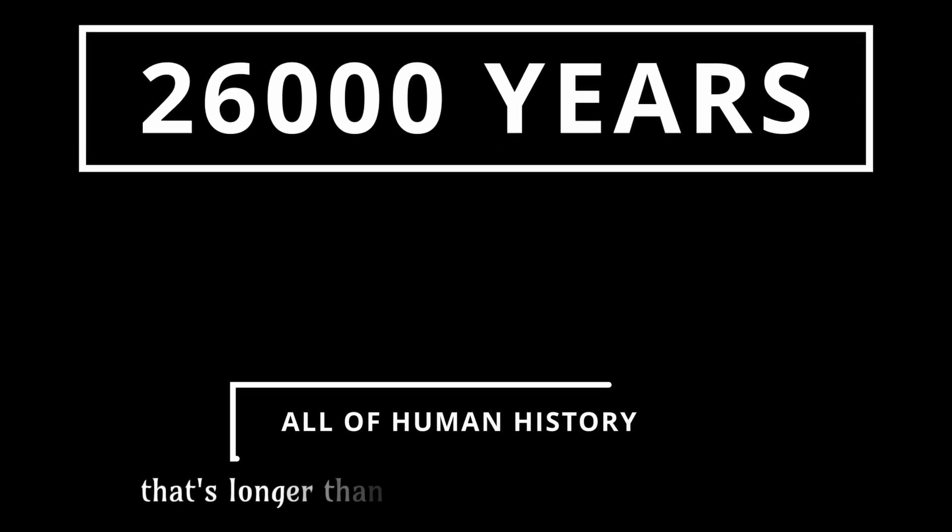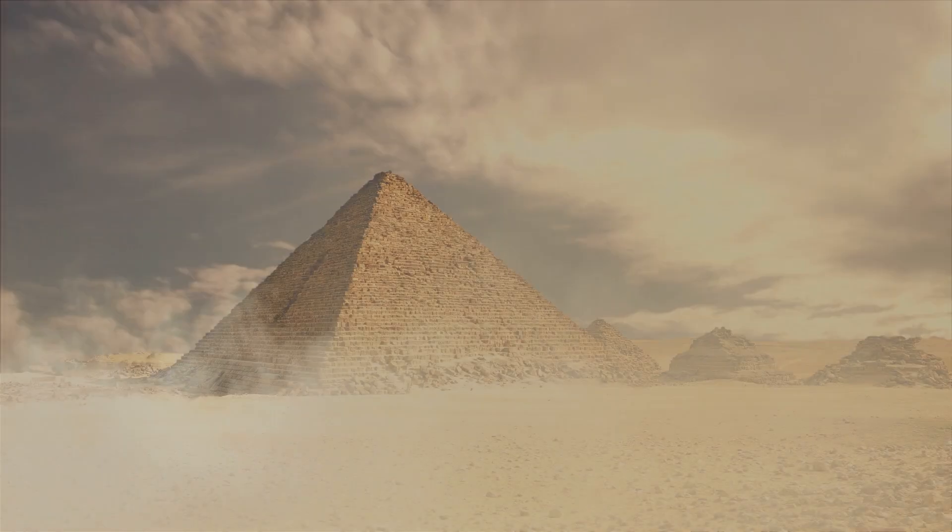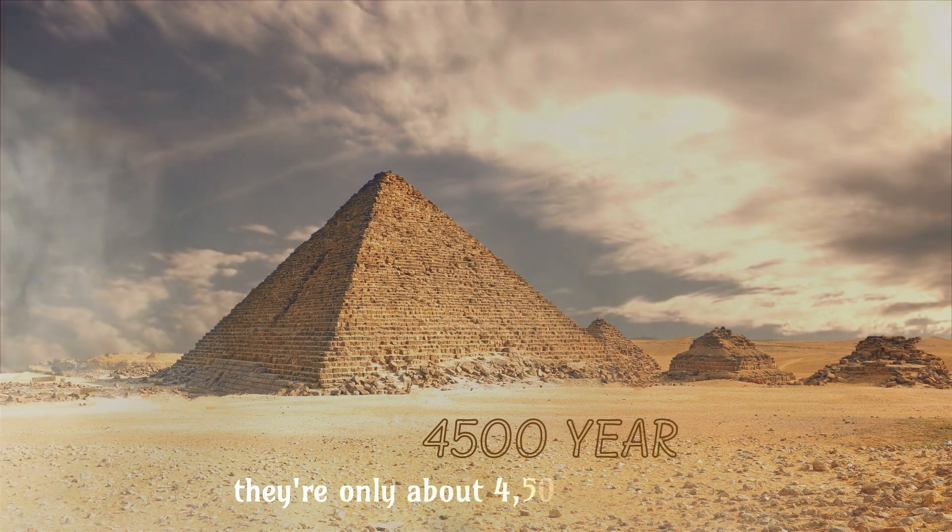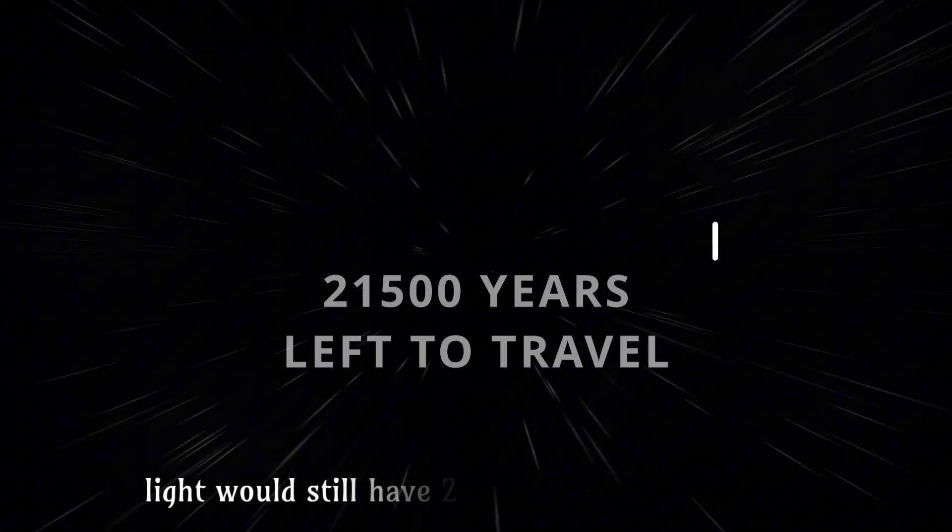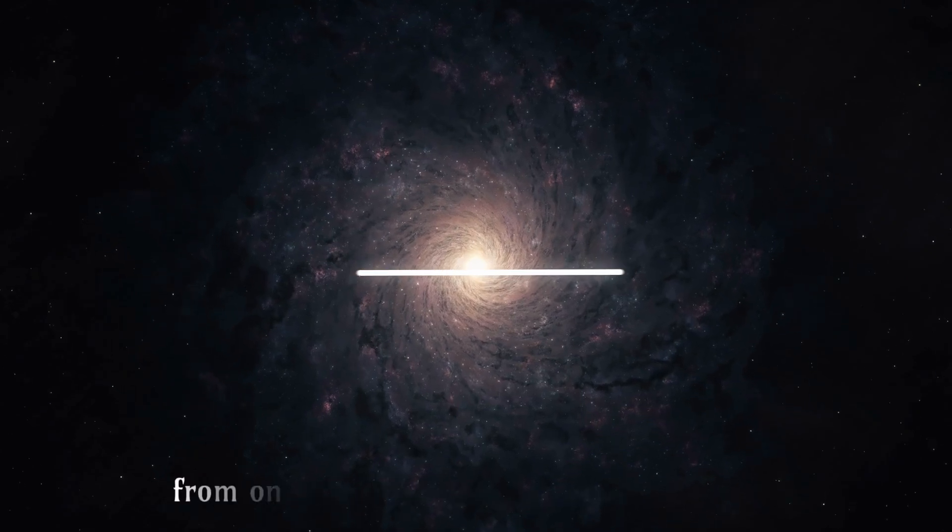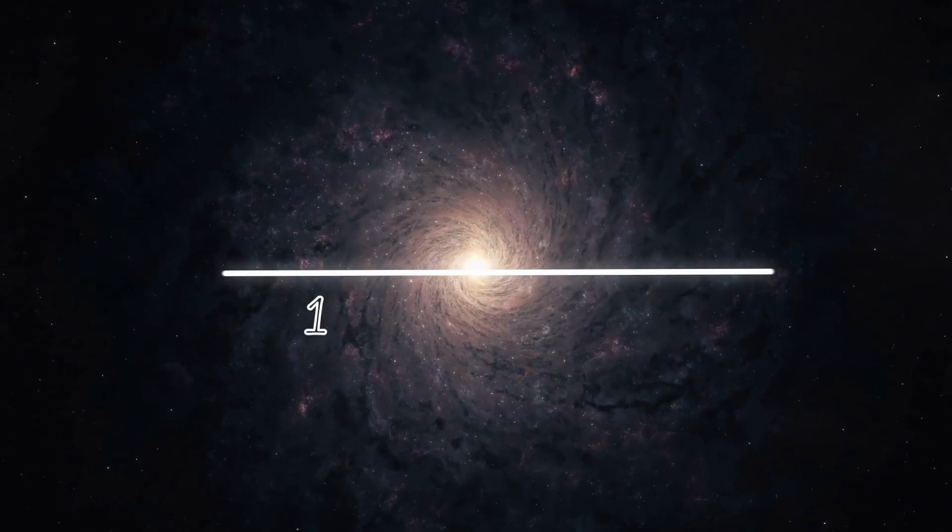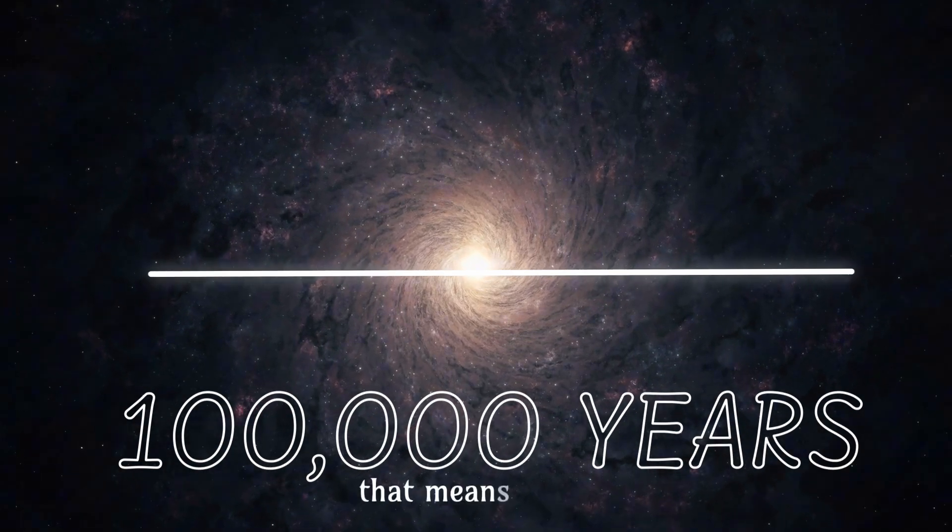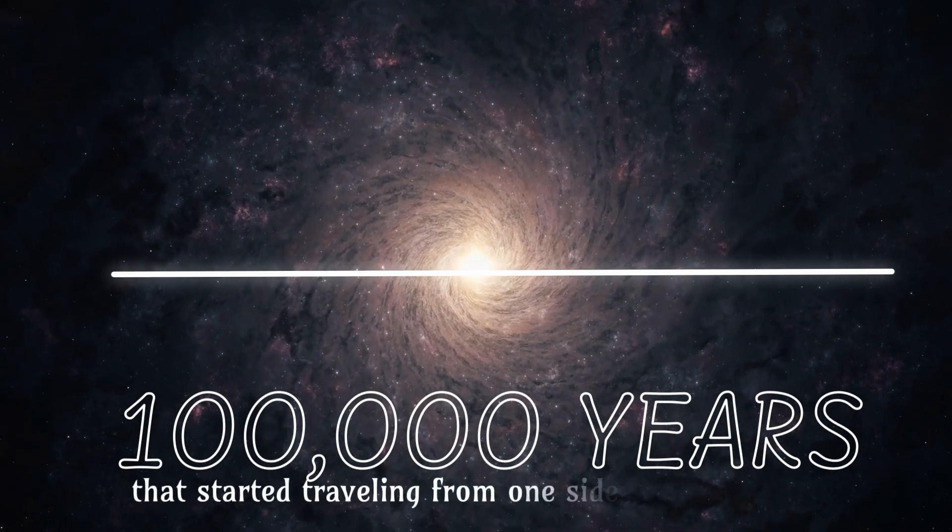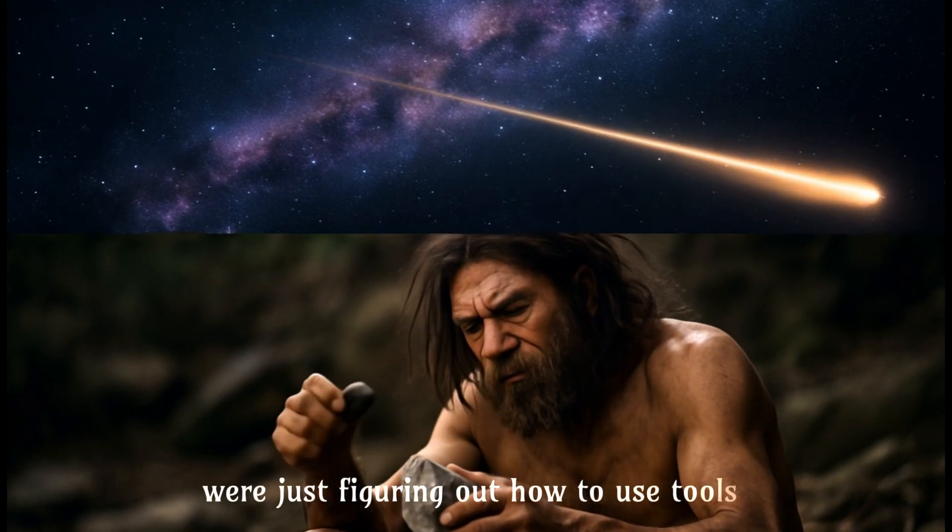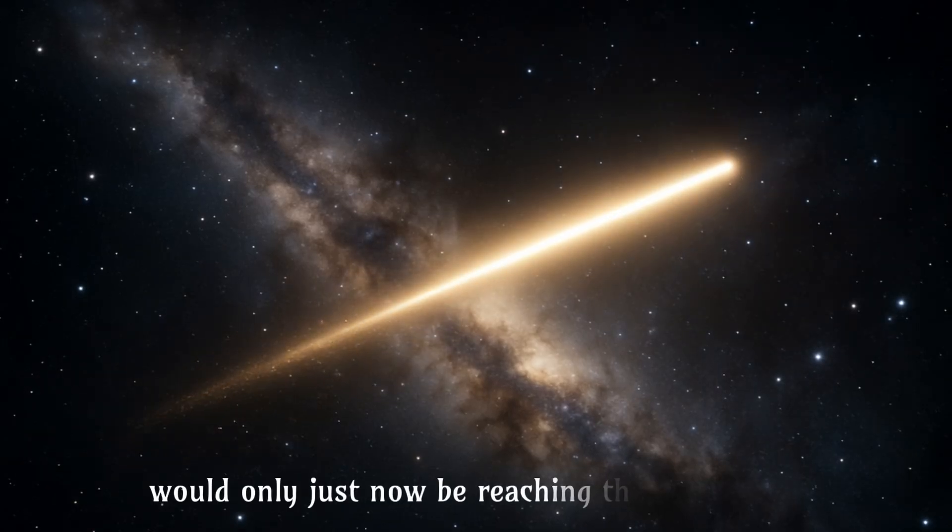That's longer than all of recorded human history. The pyramids of Egypt? They're only about 4,500 years old. Light would still have 21,500 years left to travel. And if light tried to cross from one end of the Milky Way to the other? 100,000 years. That means light that started traveling from one side of our galaxy when early humans were just figuring out how to use tools would only just now be reaching the other side.